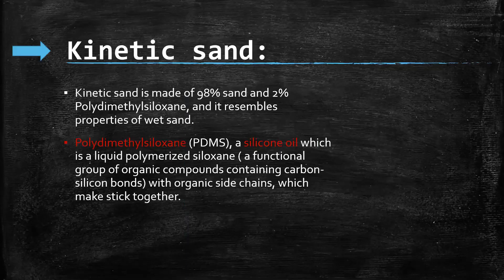So let's talk about what is kinetic science. Kinetic science is made of 90% sand and 2% polydimethylsiloxane, and it resembles the properties of real sand. Polydimethylsiloxane is a silicon oil, which is a liquid polymerized siloxane — a functional group of organic compounds containing carbon-silicon properties with organic side chains which may stick together.